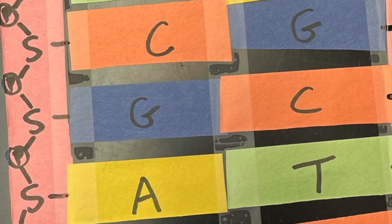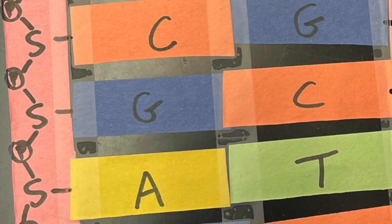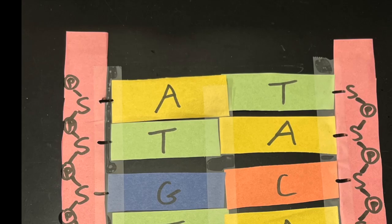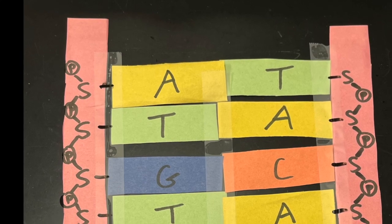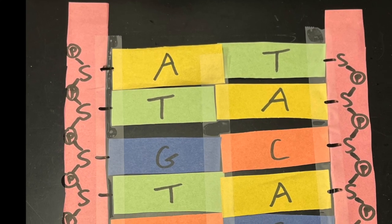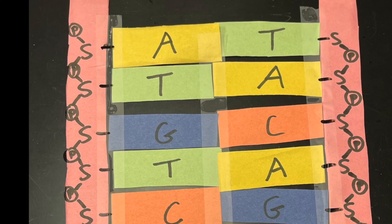Now the one thing that you have to be careful with though, is the strands are anti-parallel. Therefore, like in mine, my top left strand starts with a phosphate group and the bottom ends with a sugar.